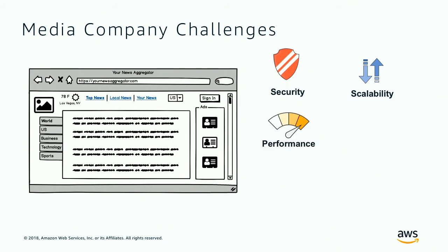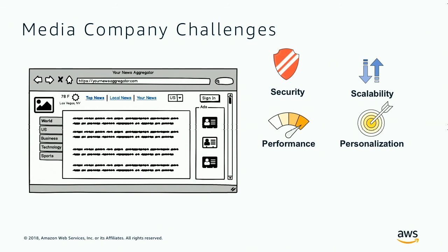Then comes performance — how do you make sure viewers are instantly getting responses? Today it's normal to expect millisecond responses. The moment latency crosses a certain threshold, people aren't waiting anymore; they move on to the next media company. And personalization — how do you reach a specific reader? During Super Bowl season, if someone is a Redskins fan, how do you make sure they get everything related to the Redskins? Similarly during a political season, you want to deliver relevant political news.